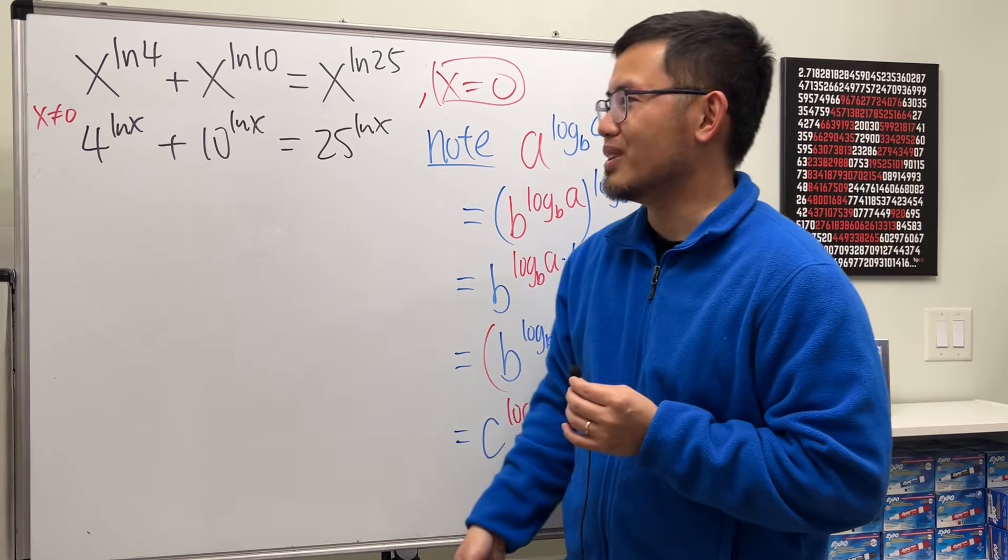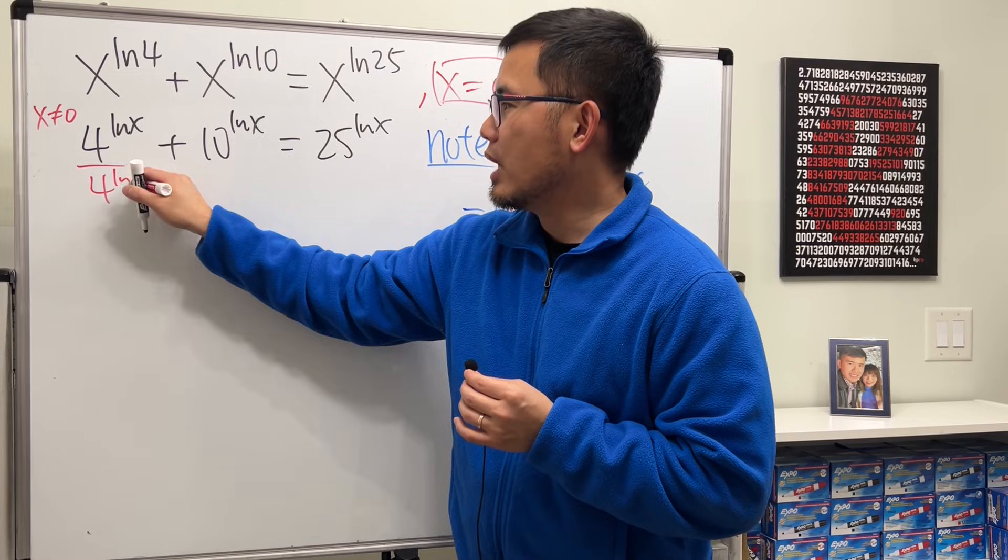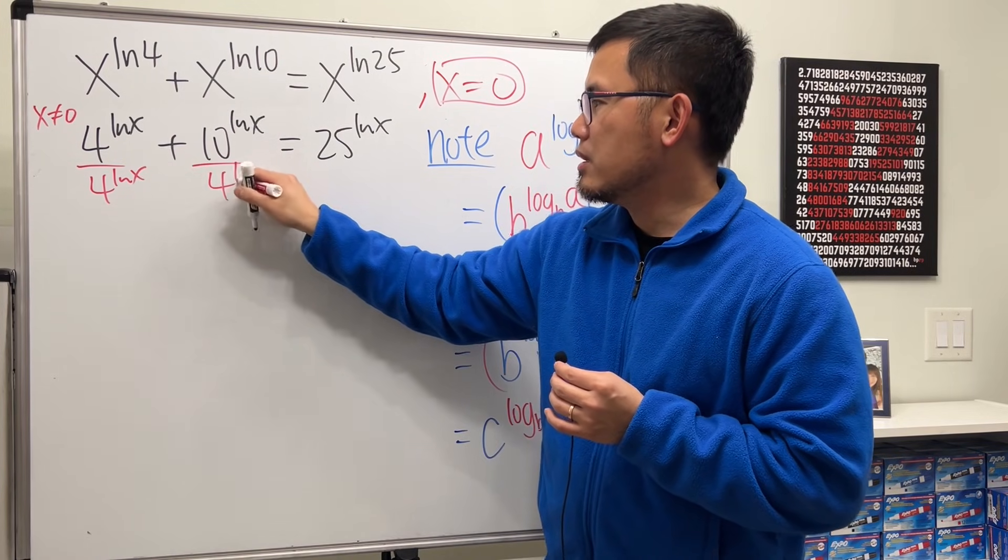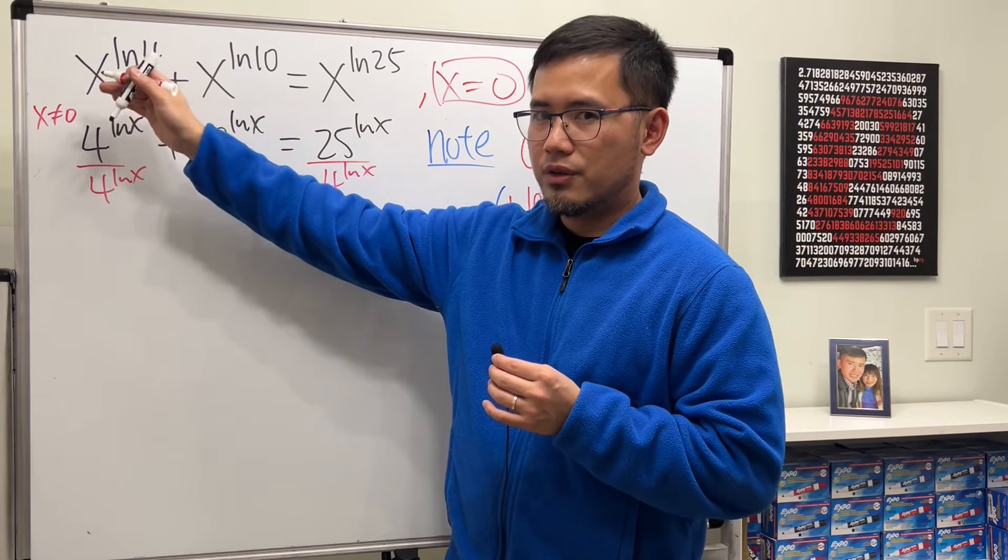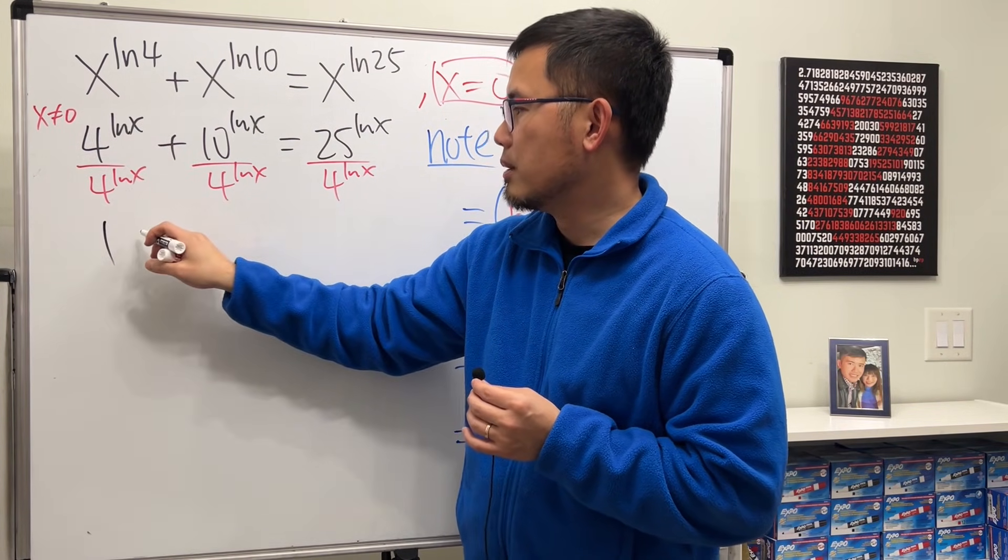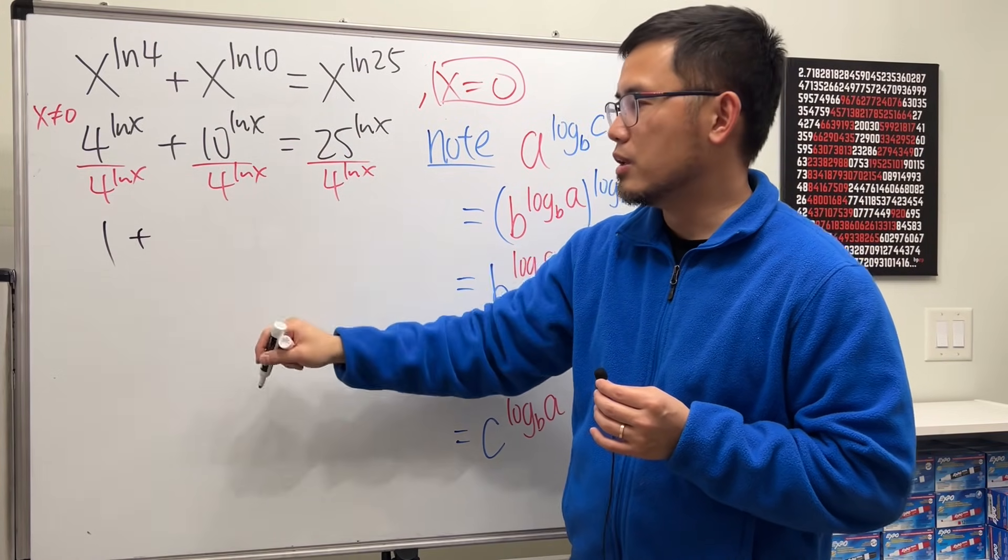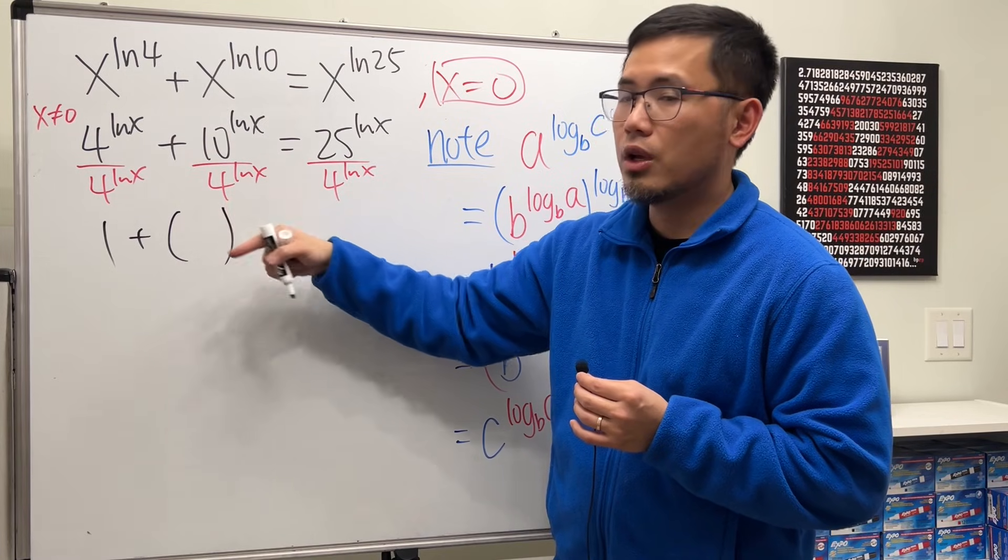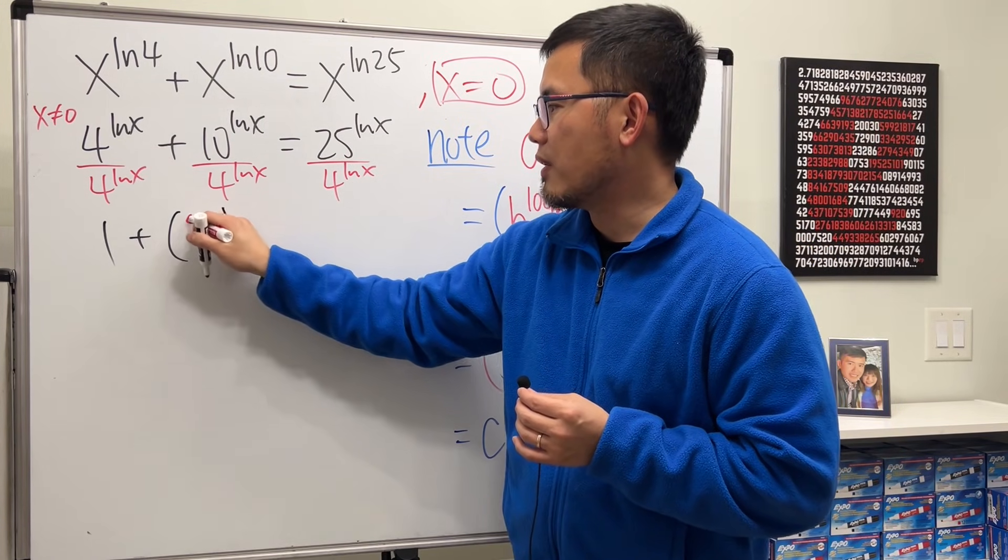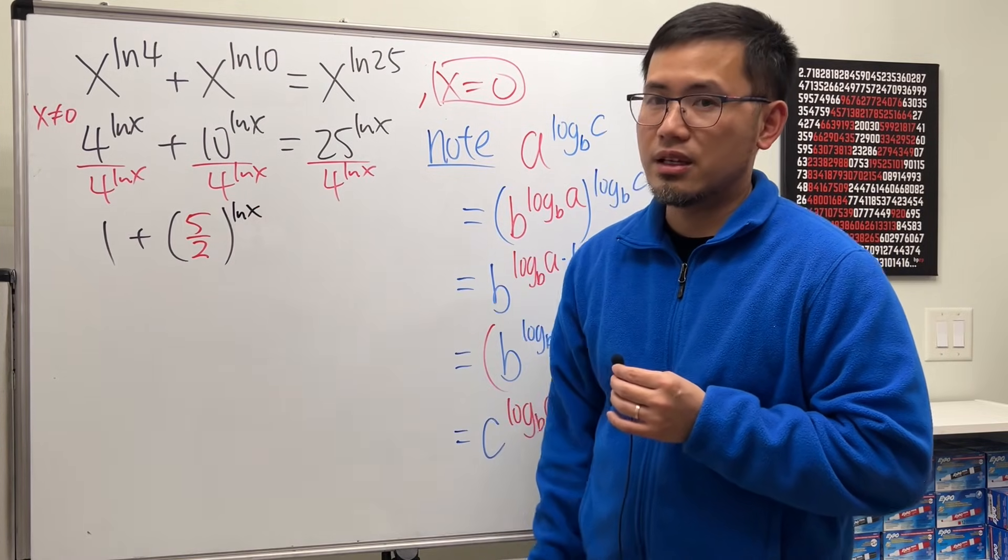So how do we continue? First, let's divide everybody by 4 to the Lnx power. Here, here, and also here. First term is just 1, plus they have Lnx power, so we can put that inside, and then we'll just have 10 over 4, reduce the fraction, we get 5 over 2, and then put the Lnx on the outside, like that.